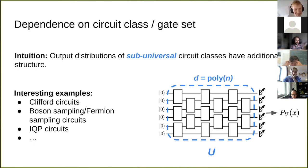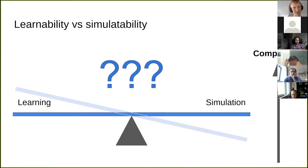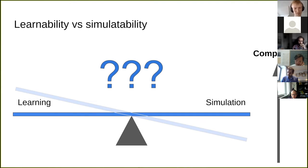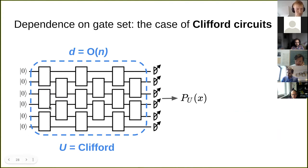Another motivation for studying restricted classes of circuits is to understand how the complexity of learning output distributions compares to classically simulating them. My current belief is that learning is in some sense harder in most cases because it's a reconstruction problem. I'll give an example of a result that has something to say in this regard. For completeness, consider Clifford circuits — linear depth is sufficient to implement all Clifford unitaries.